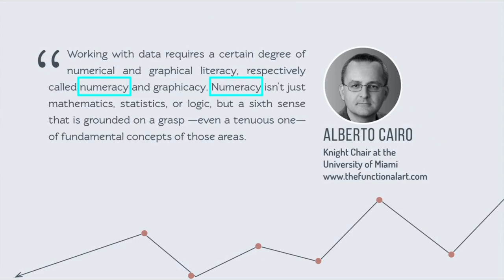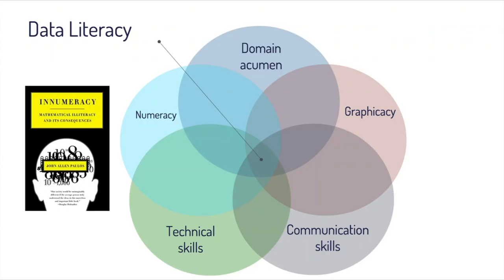We can think of this overlap of different abilities and skills, focusing on this blue circle we call numeracy. And Paulos' book covers everything outside of that circle — the ways in which we struggle with numeracy given the current state of the evolution of our brain. Let me give you three different anecdotes he includes in his book that I find really interesting and helpful.